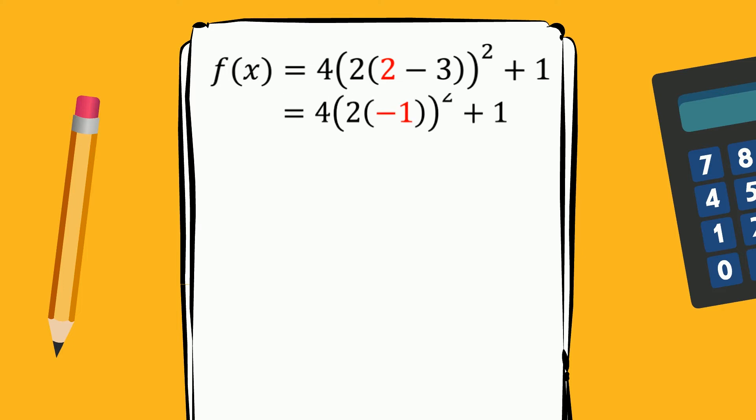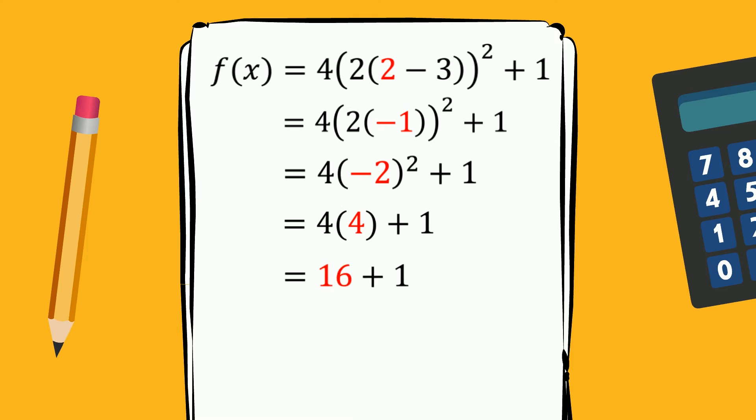First, we have 2 minus 3 giving us a result of negative 1. Next, we multiply this by 2 and square it. We can then multiply by 4 and add 1 to give us a final result of 17. The entire time we apply the operations, nothing is opposite in any way.